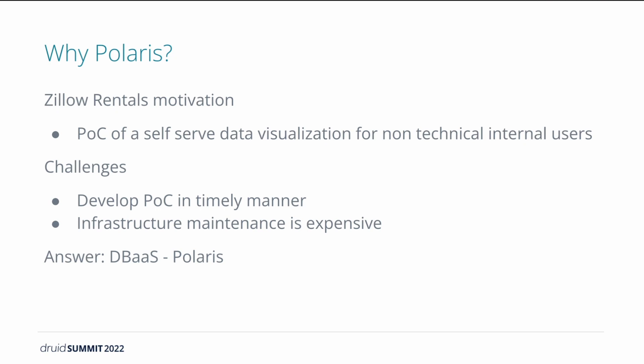Druid with Superset would be an obvious choice, but building out Druid infrastructure takes time, requires expertise, and comes with significant maintenance costs. In a proof of concept project, you want to focus your efforts to show the value of your solution instead of spending significant time building infrastructure. We found our answer, which is DB as a service — Polaris.